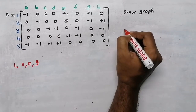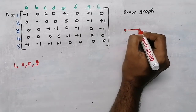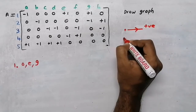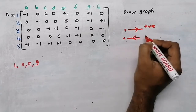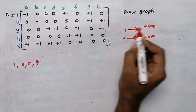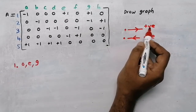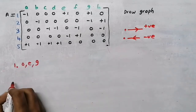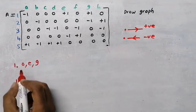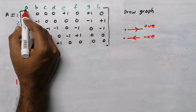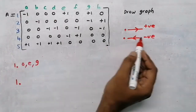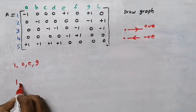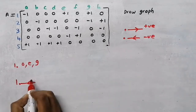Now listen carefully. From a node, if a branch is moving away then we will say it is positive. To a node, if a branch is coming then we will say it is negative. So for node 1, I am going to take the first branch - branch a. Branch a is negative. Negative means the branch is coming to our node.